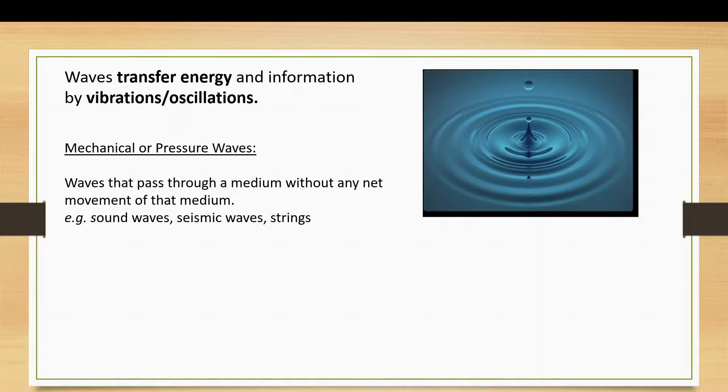As the wave passes through, you get vibrations through it, but the parts of the medium don't move with the wave along its path. Examples of these are sound waves, seismic waves, and the waves that you would have produced on strings.